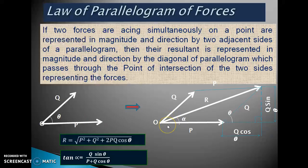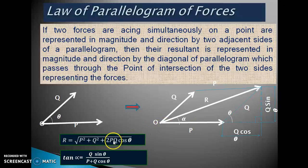Resultant R equals the square root of P squared plus Q squared plus 2PQ cos theta, and tan alpha equals Q sin theta divided by P plus Q cos theta.